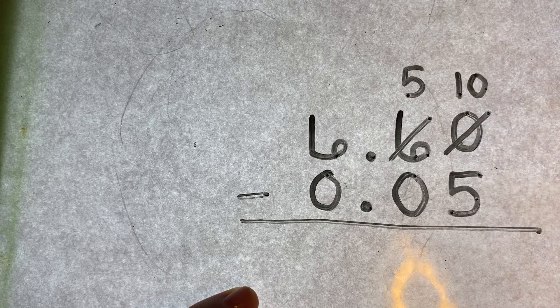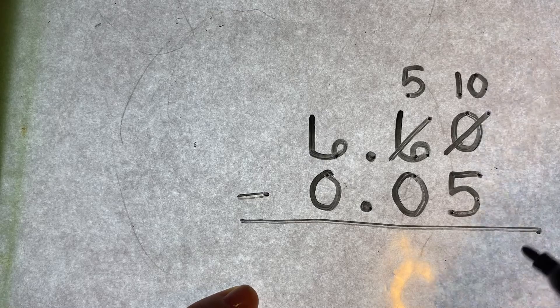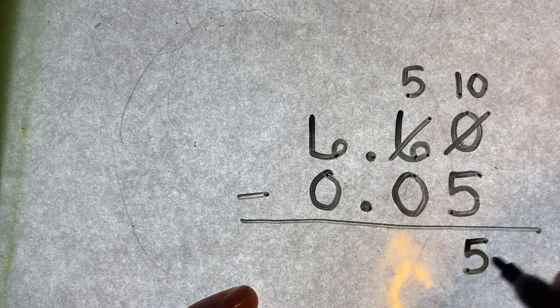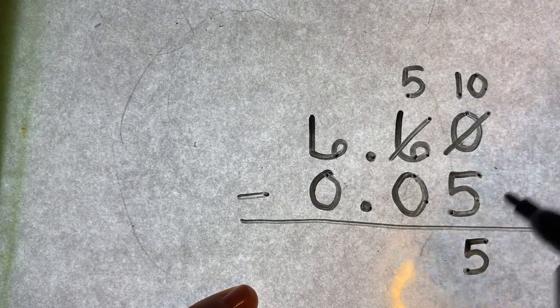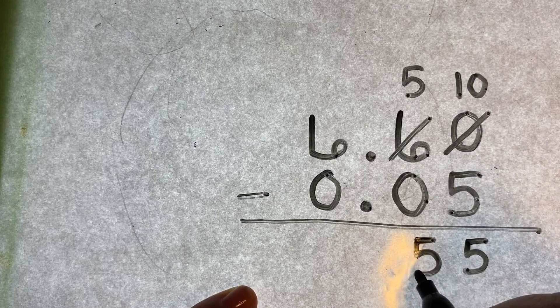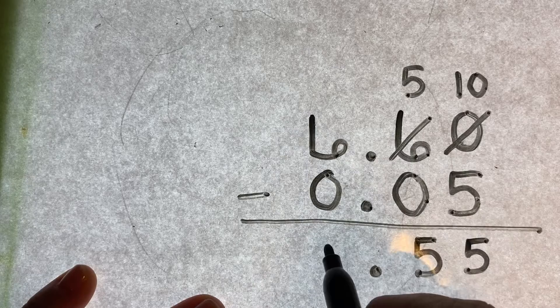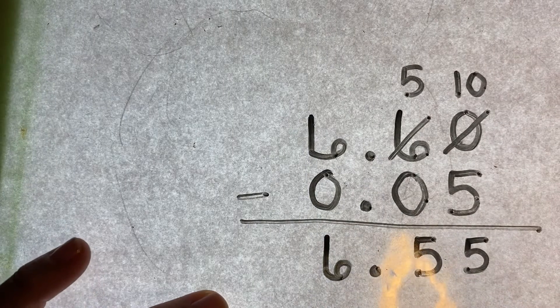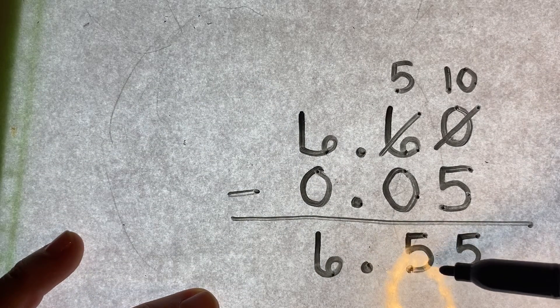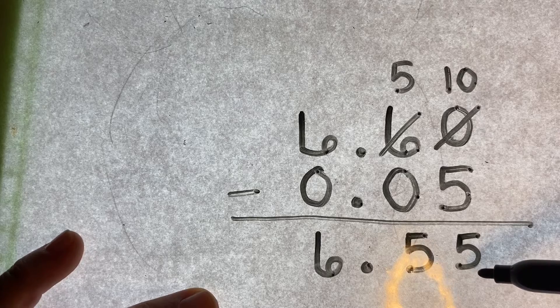Now I have ten minus five. Ten minus five. Five. Five minus nothing is five. Bring down my decimal, and I have six minus nothing, which is six. So the answer is six point fifty-five hundredths. That's what I'm going to have left.